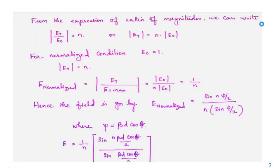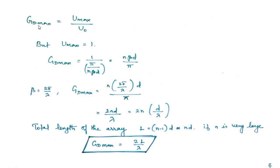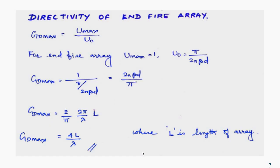Substituting into the directivity equation D = U_max / U_naught, with U_max = 1 (normalized), we get D = 1 / [π/(nβd)] = nβd / π. Since β = 2π/λ, substituting gives D = n × (2π/λ) × d / π = 2nd/λ. Taking the total array length L = nd, the directivity of the broadside array is D = 2L/λ.